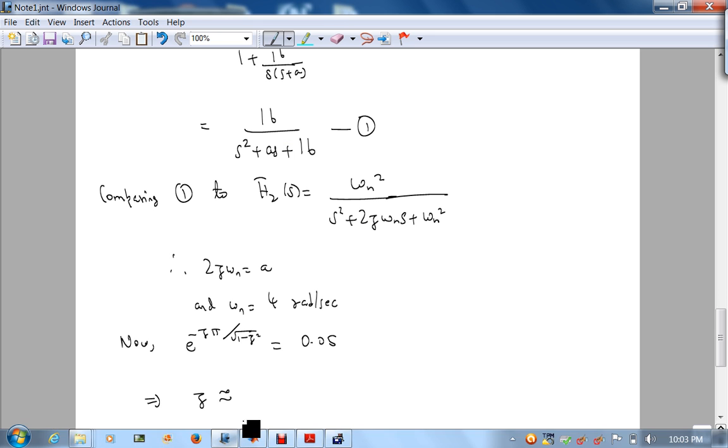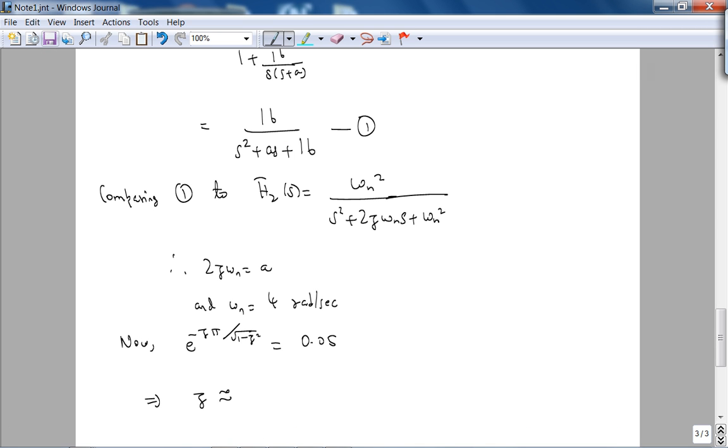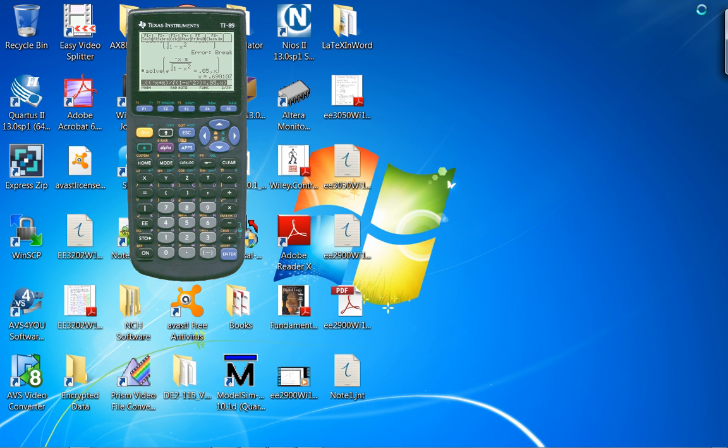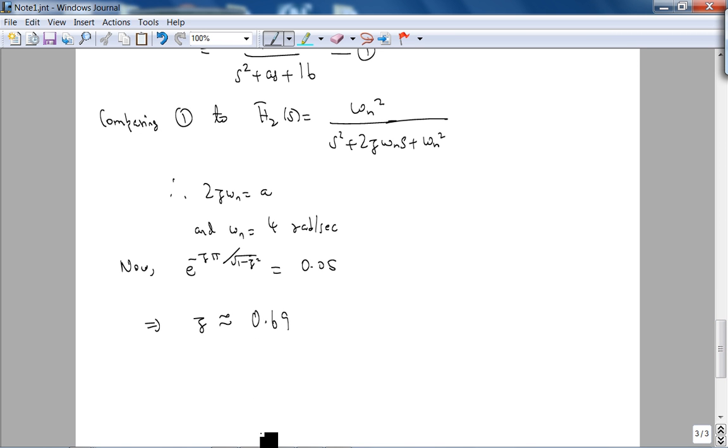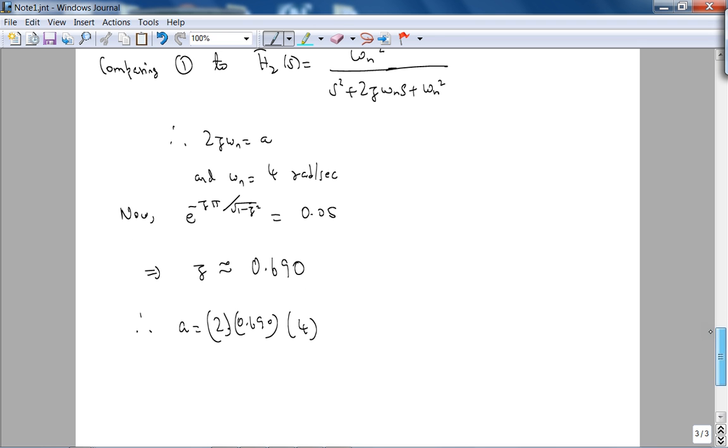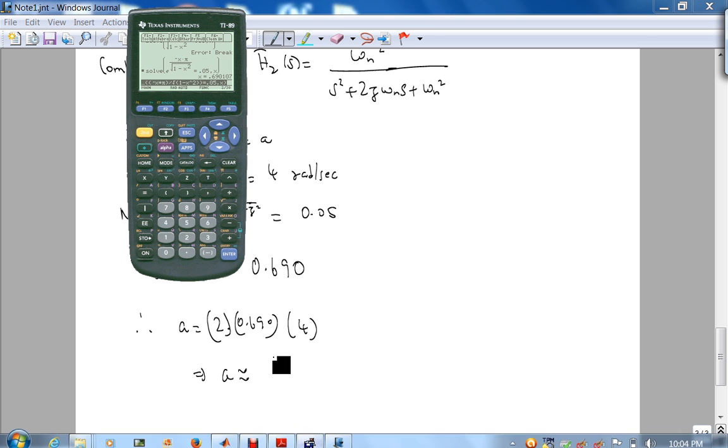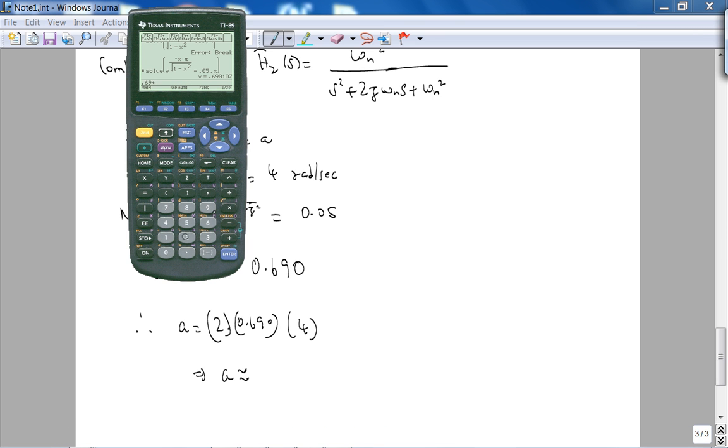Let's go back here. So zeta is approximately 0.69, let's do three decimal places, 0.690. Therefore, our A is 2 times 0.690 times 4, which implies A is approximately - let's multiply 0.69 by 2 by 4 - 5.52. Doesn't seem like there are units, so let's just check our answer in MATLAB and then check the book.